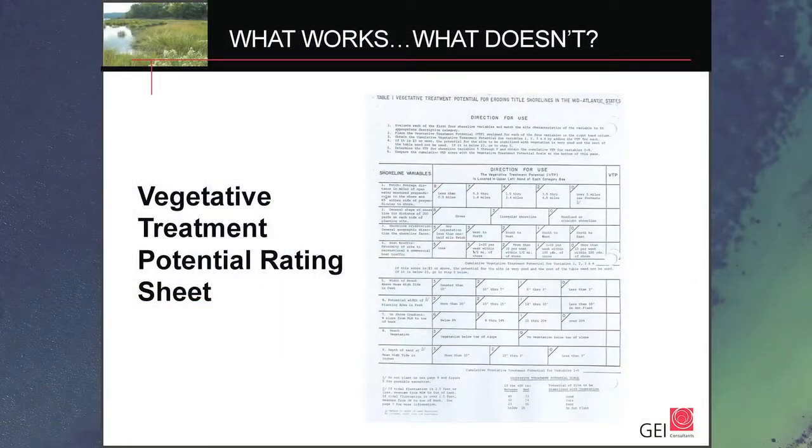This sheet helps you put numerical ratings to a site, taking a look at the fetch, the shoreline orientation, whether or not wakes are creating a problem from storm waves or boat traffic, the width of the planting zone, and the depth of the substrate. It gives you a good basic overview of whether living shorelines can even work in this location or not. If your rating comes up very low, it recommends you look into something different or some hybrid structure.